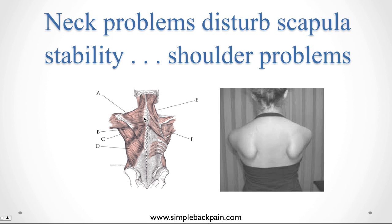Neck problems can also have an influence on the way you use the arm. Simply speaking, it can cause your neck muscles to go into overactive mode. Included in that are your upper fibers of trapezius here. And what happens when the upper fibers overwork, the lower fibers underwork, so the shoulder wings like this.